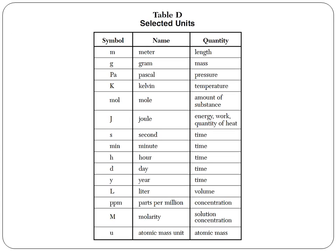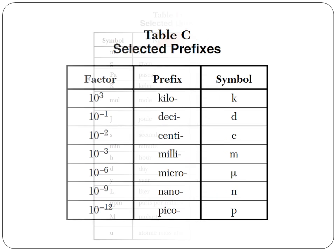Reference table D has selected units of measurement. In the first column, we have the symbol for the unit. In the second column, we have the name of the unit. And in the third column, we have the quantity or the type of measurement the unit measures.